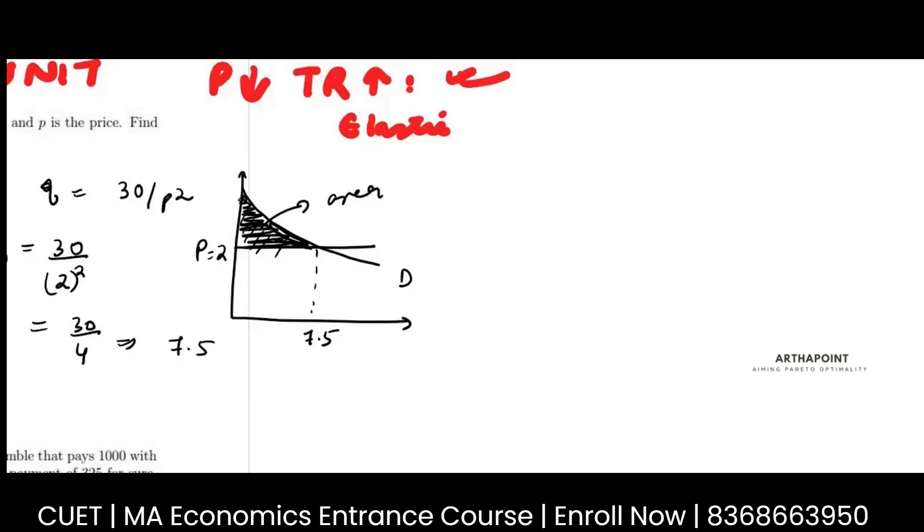It would have been possible to find consumer surplus had this been a line using the area of a triangle. Supposedly it was a downward sloping line, then I would have found that if the price is given to me as 2,